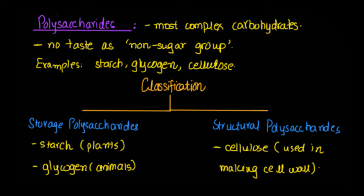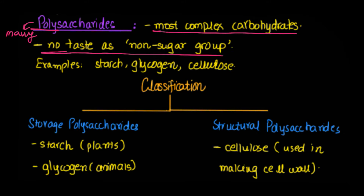Hi and assalamu alaikum everyone. Today we will be continuing with biological molecules and will be starting with polysaccharides. The prefix 'poly' tells us there's something related to many. Polysaccharides are the most complex carbohydrates, and a key characteristic is that they don't have any taste — they are a non-sugar group.